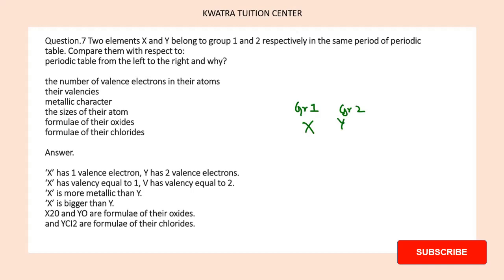...of valence electrons you will compare them. So the valence electron will be 1 and it will be 2, depends on the group. So yes, this is the answer for the first one. Second, there are valencies. Valency of the first one...